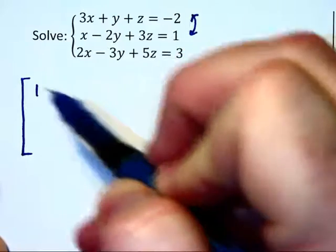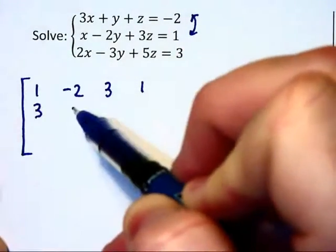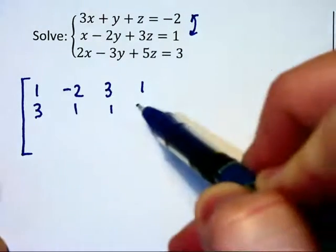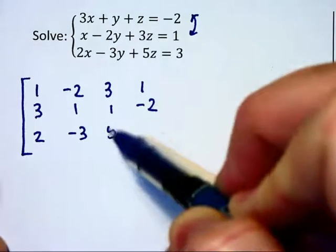let's just interchange the first two rows and write that second equation as the first row of our matrix. So that first row will be 1, -2, 3, 1. And the second row will have the 3, 1, 1, -2. And the third equation or row will stay as it is.